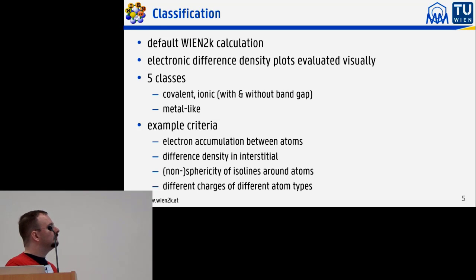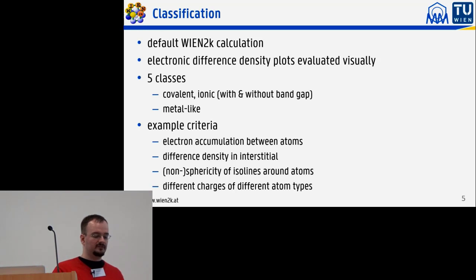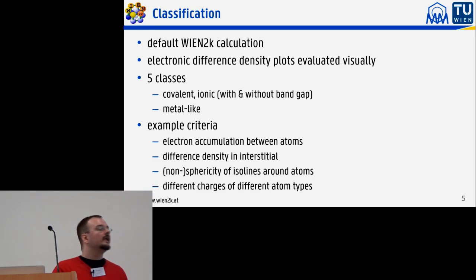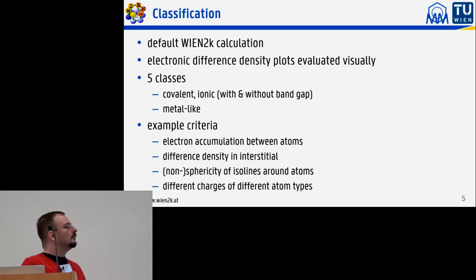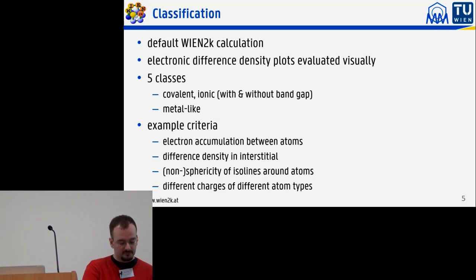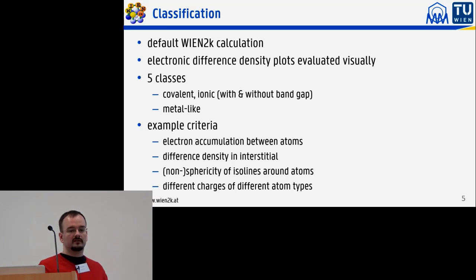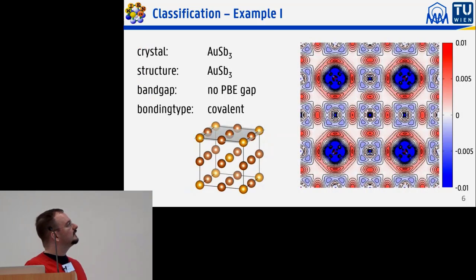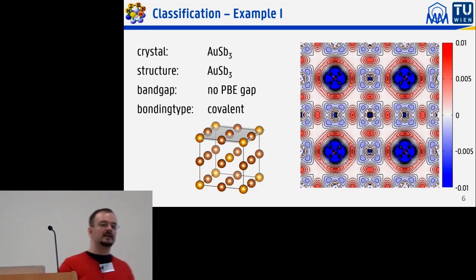I visually evaluated the density plots from Wien2K using telltale criteria to classify bond type: electron accumulation between atoms as a hint for covalency, the difference density in the interstitial region, sphericity or non-sphericity of ISO lines around atoms, and different charges for different atom types.